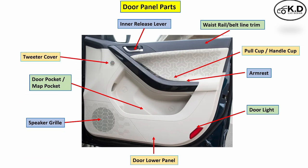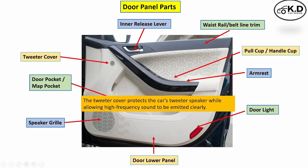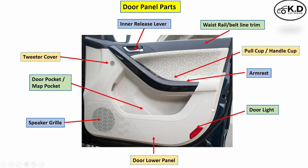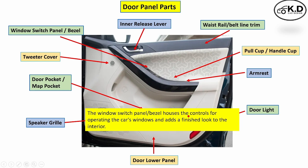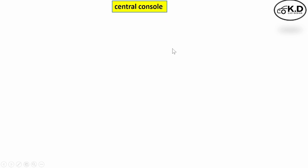The next part is the tweeter grill, which adds sound clarity by improving the frequency response for the passenger. The next part is the window switch, used to open and close the window electrically. The window switch panel or bezel is the cover provided to the housing.